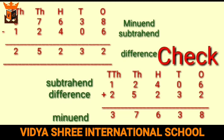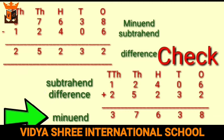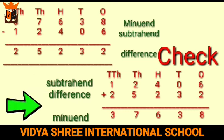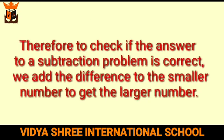Now to check the answer, we add the difference and the subtrahend. After adding 12,406 and 25,232 we get the minuend, which is 37,638. This confirms the difference is correct, as the addition of the difference and the subtrahend equals the minuend. Therefore, to check if the answer to a subtraction problem is correct, add the difference to the smaller number to get the larger number.